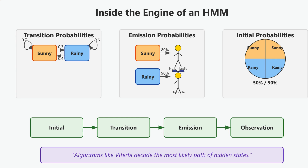Transition probabilities: this defines how likely it is to go from one hidden state to another. For example, there might be a 70% chance it stays sunny and a 30% chance it switches to rainy.